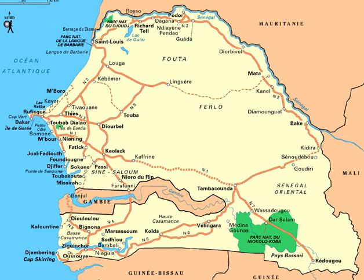The northern border is formed by the Senegal River; other rivers include the Gambia and Casamance rivers. The capital, Dakar, lies on the Cap Vert Peninsula, the westernmost point of continental Africa.